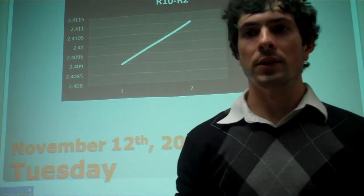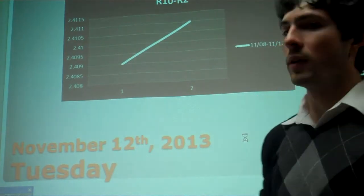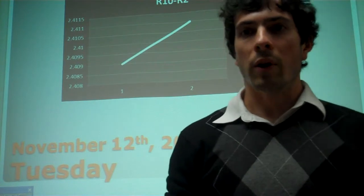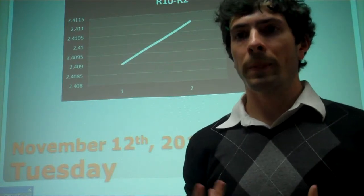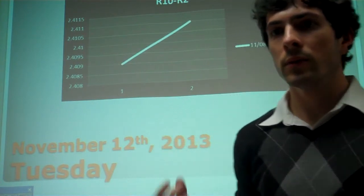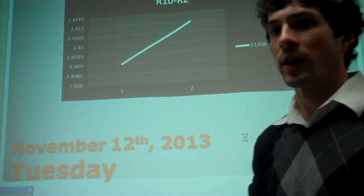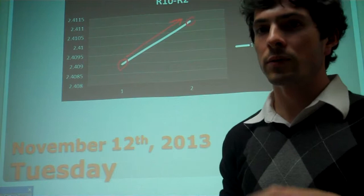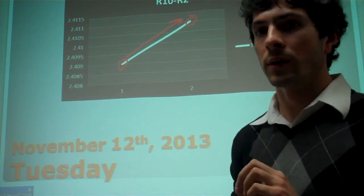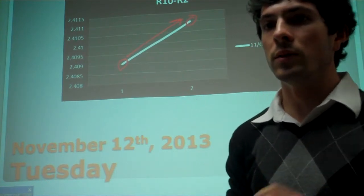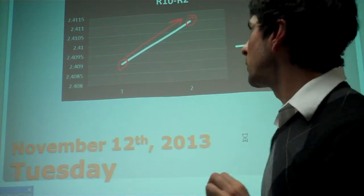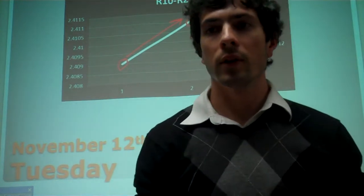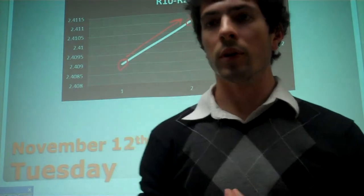And as you can see with the R10-R2 method of the percentage change, by reading the news, from Friday to Tuesday there shows a drastic increase in the slope from 2.409 on Friday to 2.411 on Tuesday, which is pretty good. Now for the next day.